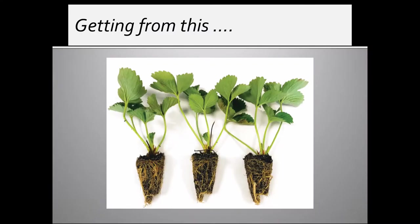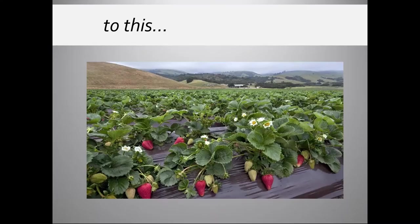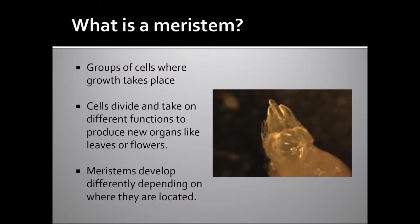The whole idea is to get an understanding of how you go from bug plants or dormant crowns to a flowering plant. It all comes down to the meristem. The meristem is a group of cells where growth is taking place. The cells divide and take on different functions to produce new organs such as leaves or flowers.